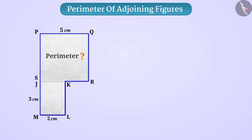First of all, point S and point J are coming at each other. So we will name only one of them. Like here, we will call this point as point S. Here, we get a new shape PQRKLM by putting both the shapes together.